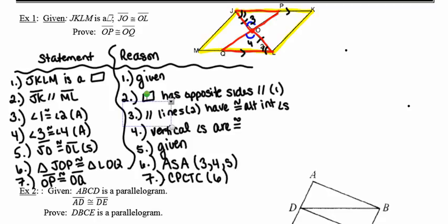Now that those two triangles are congruent, all of their corresponding parts must be congruent as well — giving us OP ≅ OQ by CPCTC. That's a nice proof that integrates the properties of a parallelogram in order to prove a result about triangles.